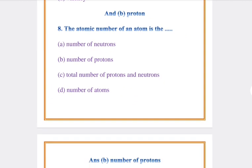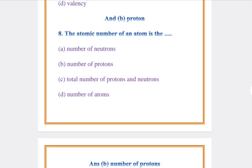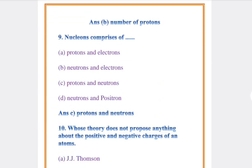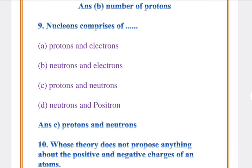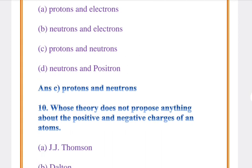Question number 8: The atomic number of an atom is the? Answer: B, Number of protons. Nucleons. Nucleons comprises of? Answer: C, Protons and neutrons.